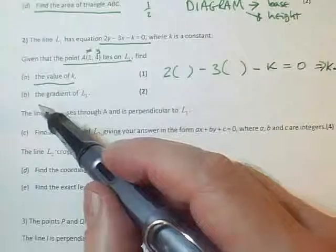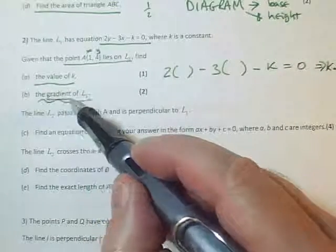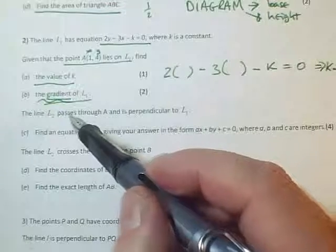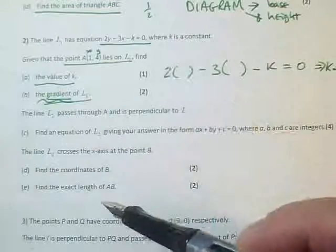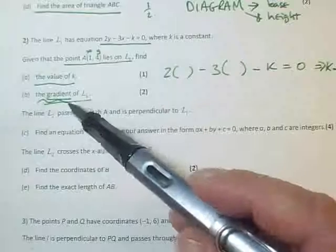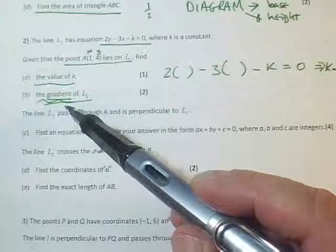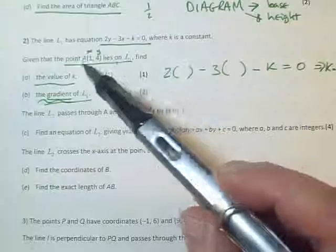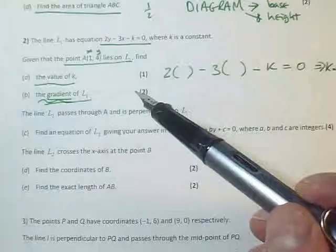Okay, the gradient of L. Now gradient is a trigger word, could be three methods. Is it dy by dx? Doesn't look like a differentiation question. So is it the two-point method for gradient? Well, have I got two points? I've got one point, I haven't got another point.